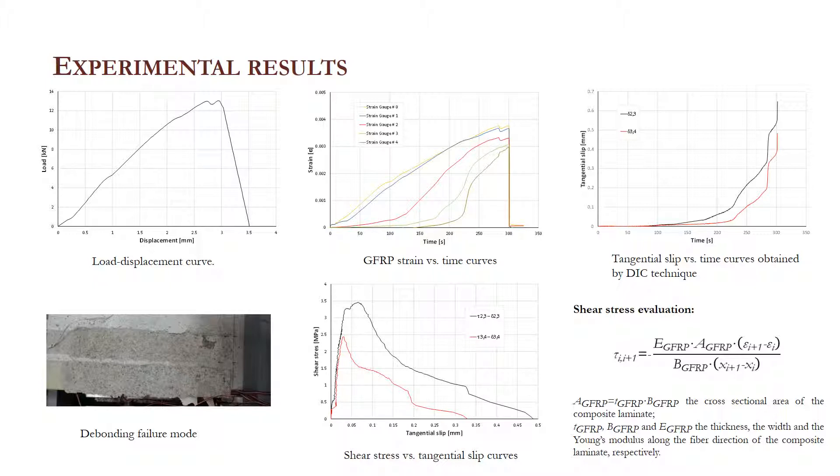The shear stress versus tangential slip curves are representative of experimental evaluation of cohesive shear acting at the concrete-GFRP interface, in a form coherent with a cohesive zone approach.